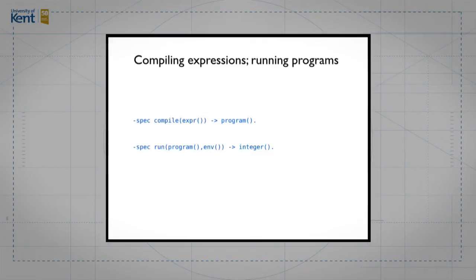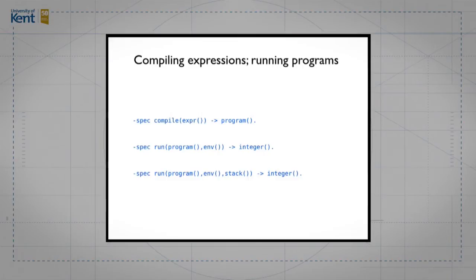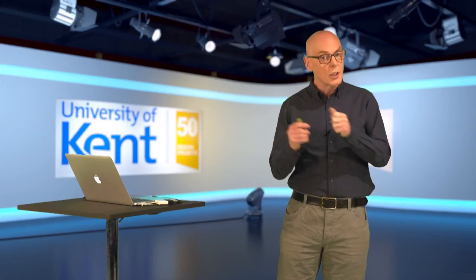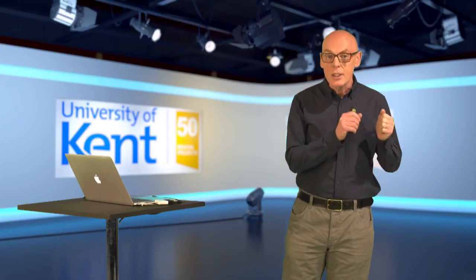There's a problem though: when we run a complete program it starts with an empty stack, but once execution begins the stack is no longer empty. So the run function actually takes three arguments — the program not yet executed, the environment, and the current stack — and returns an integer result. So: compile takes an expression to a list of instructions, and run takes a program, an environment, and a stack and gives us a result.